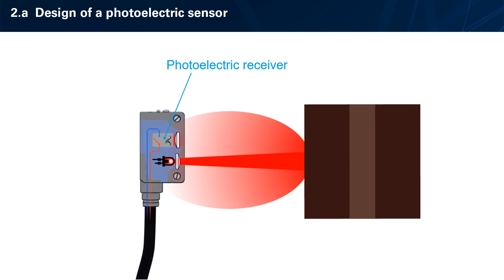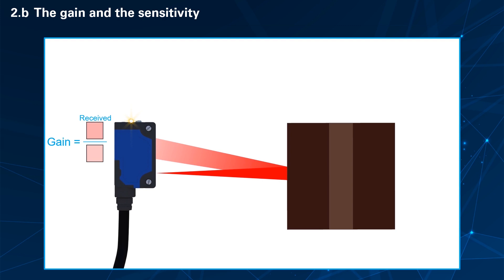As the light intensity at the receiver increases, the output of the sensor changes state. It behaves like an electrical contact. The gain is the ratio between the received light energy and the necessary light energy to switch the product on. When the quantity of light is not enough, there is no detection.